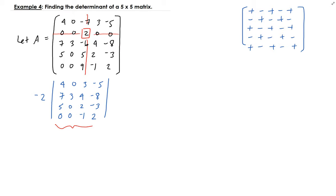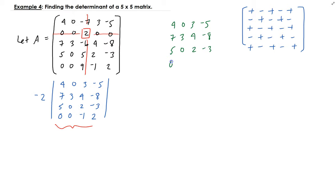Now let's focus on finding the determinant of this four by four sub-matrix: four, zero, three, minus five, seven, three, four, negative eight, five, zero, two, minus three, zero, zero, negative one, two. We'll notice that the second column here has only one non-zero value, so we want to use that to help us find the determinant.